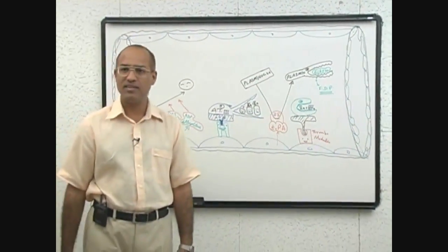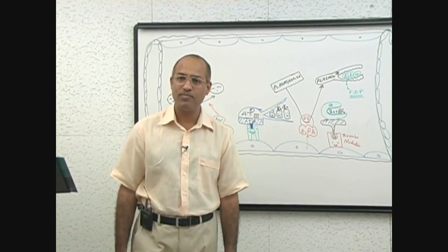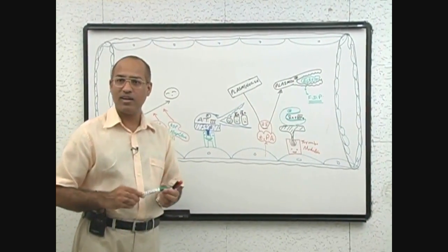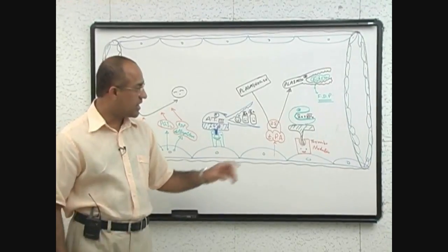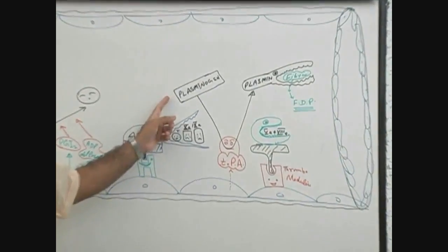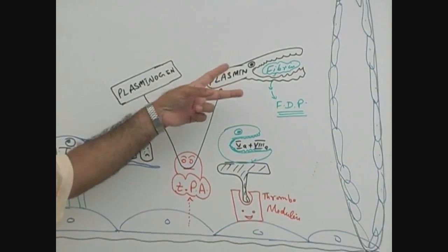What does it mean? That healthy endothelium has the power to destroy the fibrin. How does it destroy fibrin? It produces tissue plasminogen activator, which will activate the plasminogen into plasmin. Plasmin is an enzyme which is a fibrin cutter.